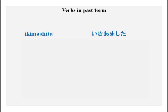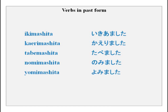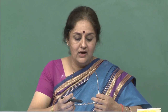Now practice the verbs in mashita form with me: Ikimashita. Kaerimashita. Tabemashita. Nomimashita. Yomimashita. Nemashita. Benkyoshimashita. All the verbs you have done in masu form and masen form, you can now practice in mashita form.